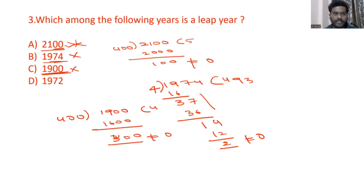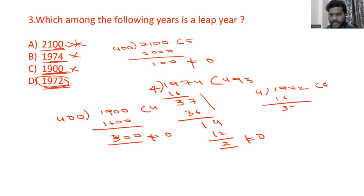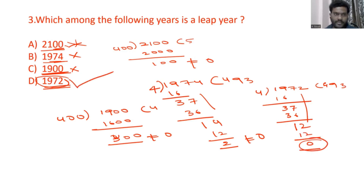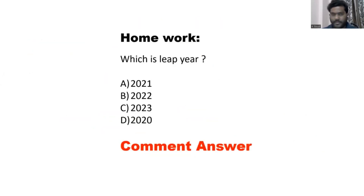Therefore 1900 is not a leap year. Now consider 1972 — it is a normal year, not a century, so we divide by 4. Dividing 1972 by 4: 4 times 493 is 1972, giving a remainder of 0. Therefore 1972 is a leap year. The answer is option D.